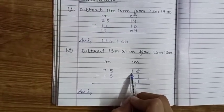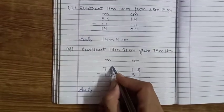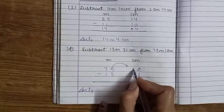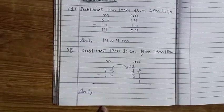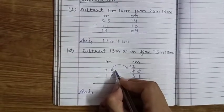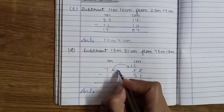Yahan per left ki digit kaunsi hai - 5. Aap ismein se borrow lenge. Jab aap ismein se one borrow lenge toh ye one aapki change ho karke new digit 11 ho jayegi. Aur yahan per aapne ek borrow de diya tha toh ek ismein se minus ho jayega. 5 mein se aap one minus karenge toh new digit yahan per kya ho jayegi - 4.